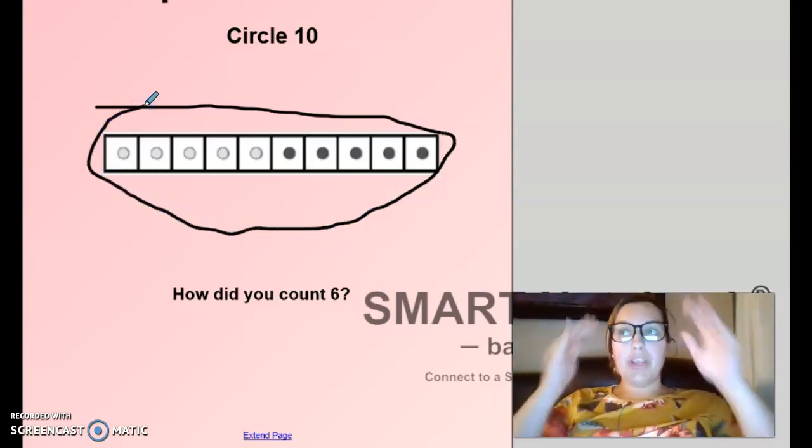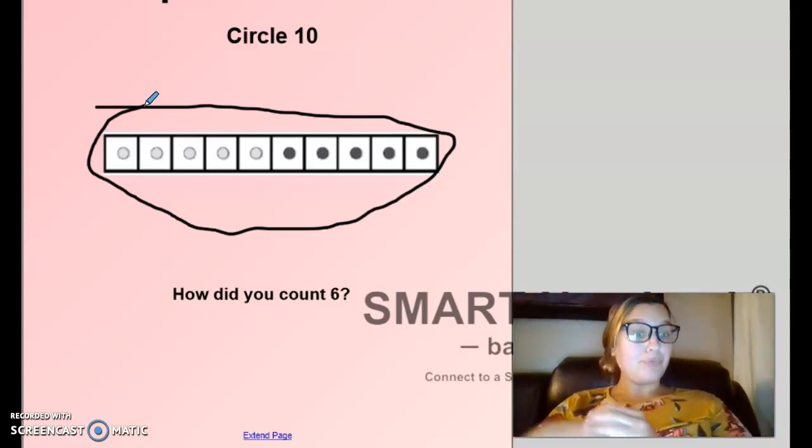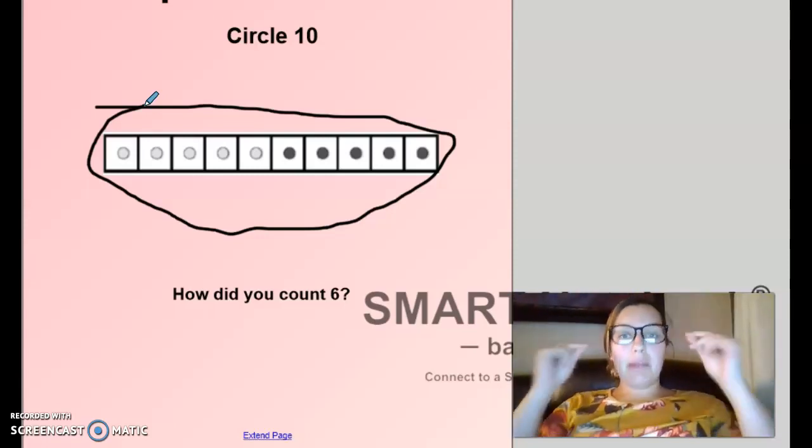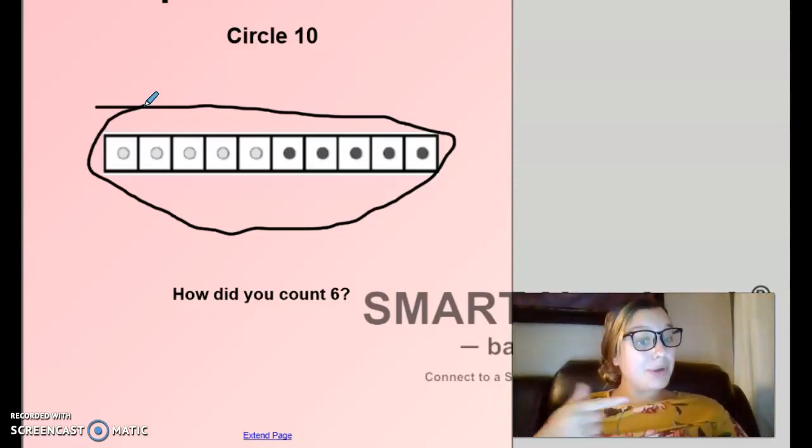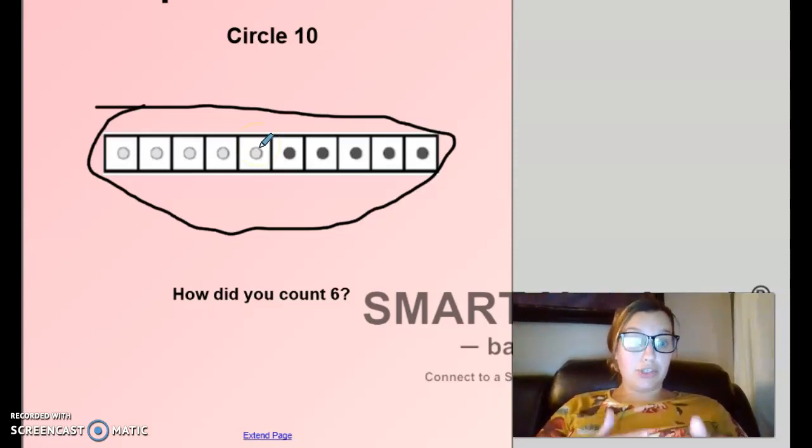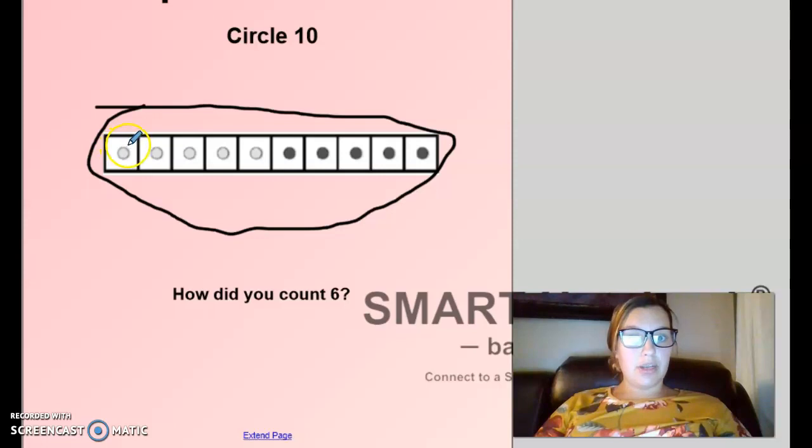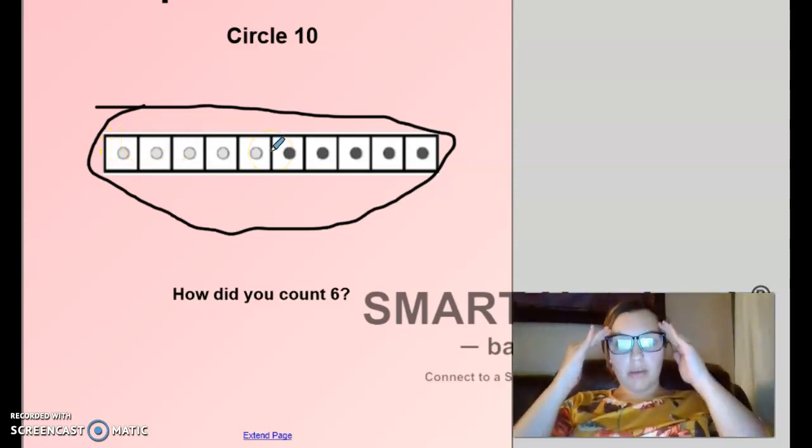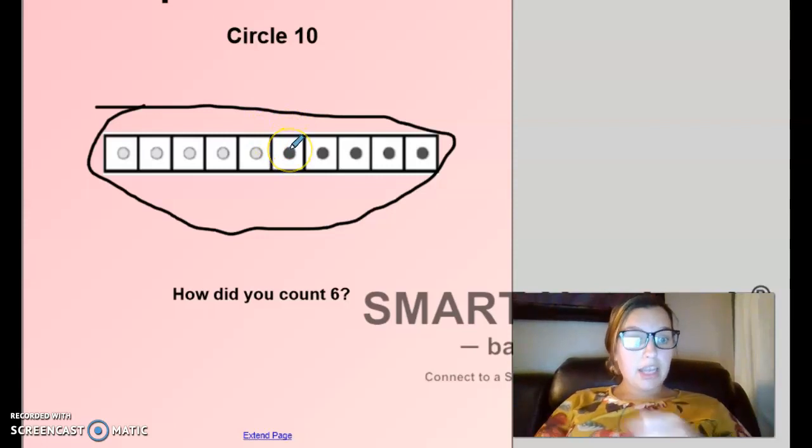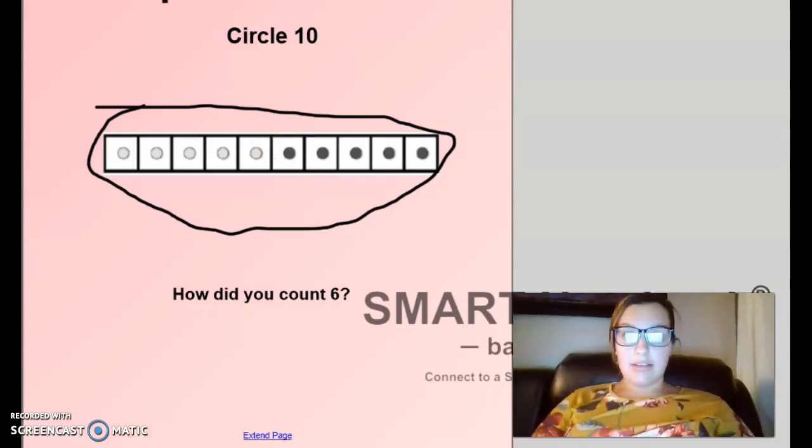So what we can do and what your mind is going to start to do is subitize. You're going to be able to see a number of dots, a number of fingers, a number of lines, anything. And your brain is just going to know what we're doing. That's what we're going to start getting in the habit of doing.